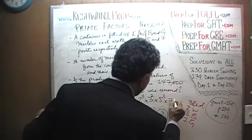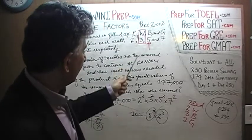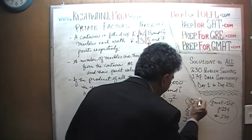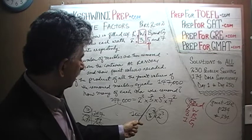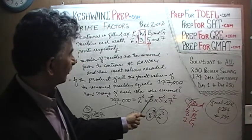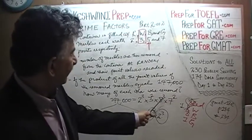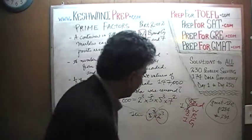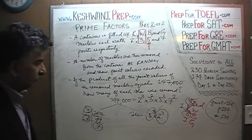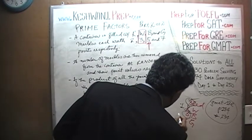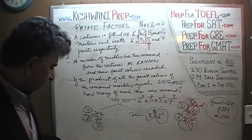So the answer: 2 cubed — that's 3 red marbles, same as before. 3 to the first power — 3 is white, and we only have 1 white this time. 5 cubed — that's blue, 3 blue marbles, same as before. And 7 squared — that's 2 greens, whereas before we had only 1. So we have 2 greens and only 1 white. The rest is the same. That's all — we're done.